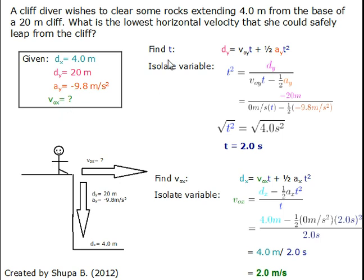We will solve this problem by first finding the time. We will do this by using the vertical components of the equation dy equals voy times t plus one half times ay times t squared.